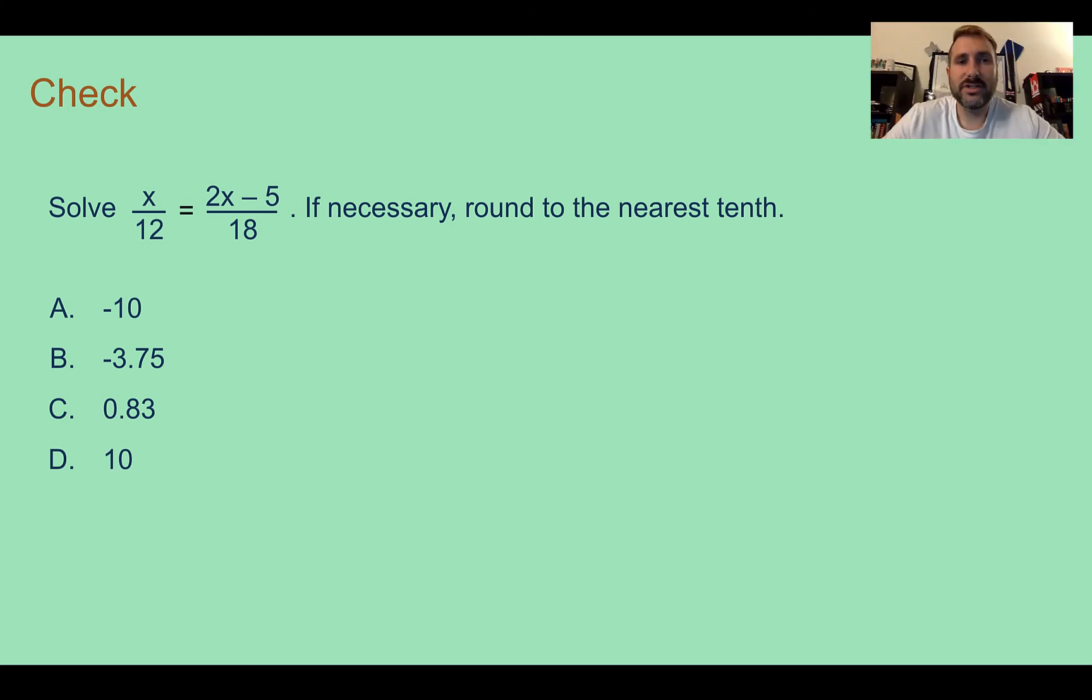Check your answer. So for this one, I'm going to use cross-multiplying, just showing we're multiplying by the denominator both times. So if I do that, I get 18x equals 12 times 2x minus 5. Distributing out, I have 24x minus 60. And that is still equal to 18x.